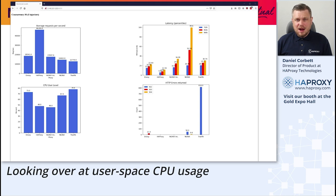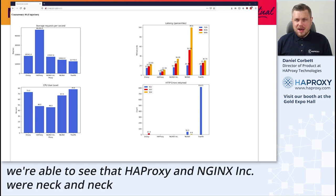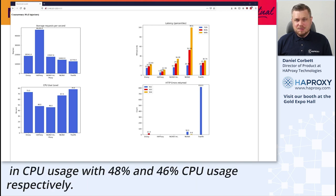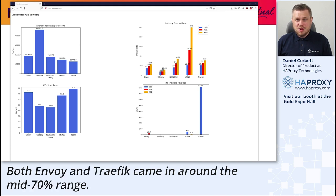Looking over at user space CPU usage, we're able to see that HAProxy and NGINX Inc. were neck and neck in CPU usage with 48% and 46% CPU usage respectively. Both Envoy and Traefik came in around the mid 70% range.